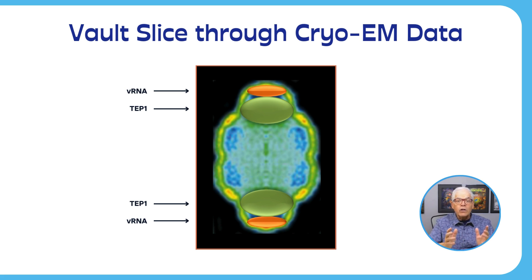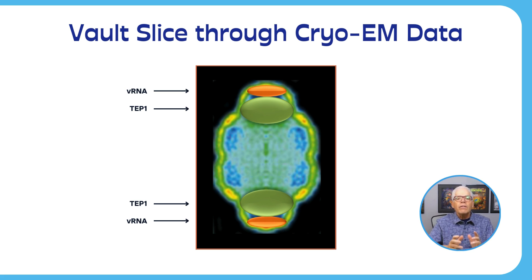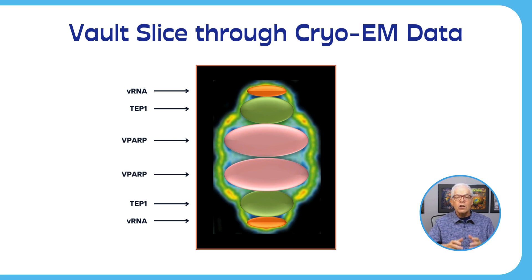Later, we did similar studies with vaults isolated from mice with their V-part protein knocked out, and we found that the V-part protein was near the waist, shown by the pink blobs. How awesome is that?